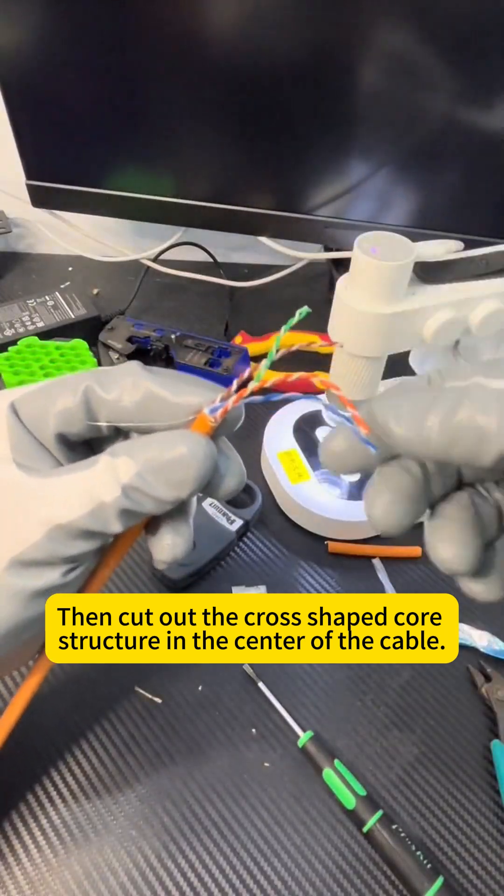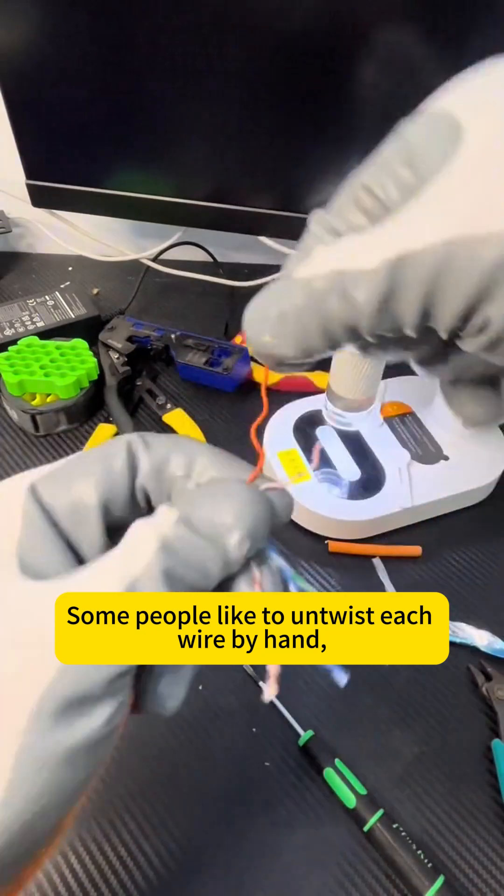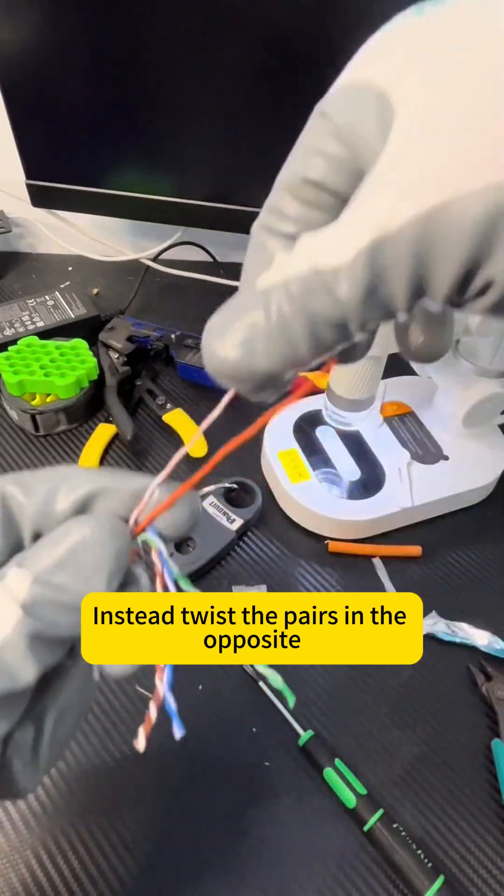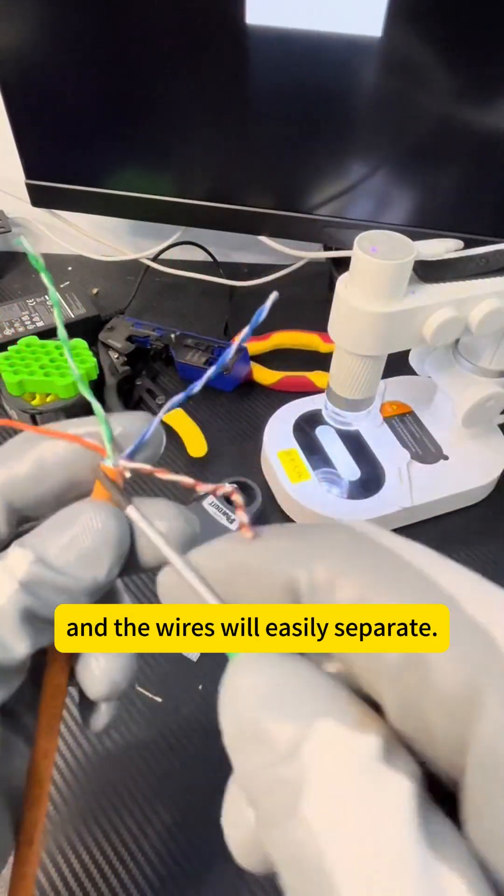Then, cut out the cross-shaped core structure in the center of the cable. Now, how do you quickly separate the wires? Some people like to untwist each wire by hand, but this can easily hurt your fingers. Instead, twist the pairs in the opposite direction to how they're twisted. Use a screwdriver to do this a few times, and the wires will easily separate.